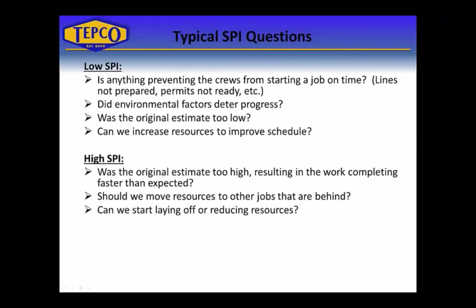So what does SPI tell us? Some typical questions when you see a low SPI: is there anything preventing crews from starting a job on time? In the oil and gas industry this could mean that lines are not prepared to open, permits are not ready, etc. Were there any environmental factors that stopped them from working — hurricanes, bad weather, rain, lightning? Was the original estimate too low? Did they just not plan it correctly? And can you increase the resources to improve the schedule? In that case you would also want to consider CPI, which will be a separate YouTube presentation.